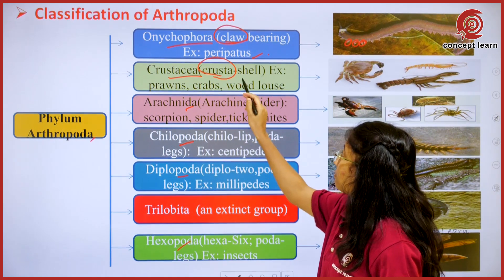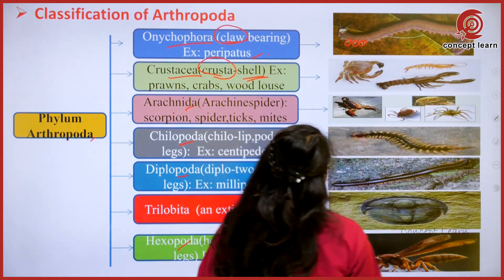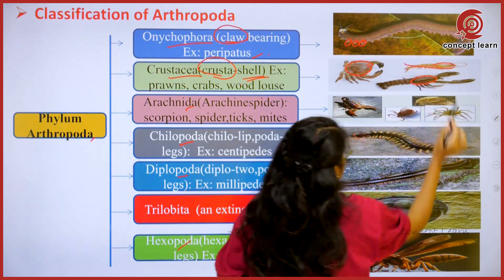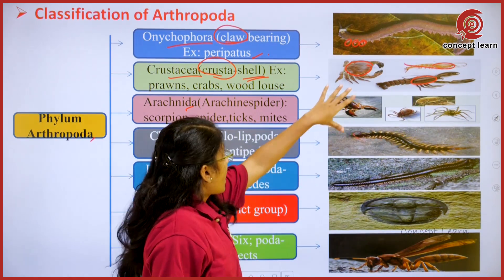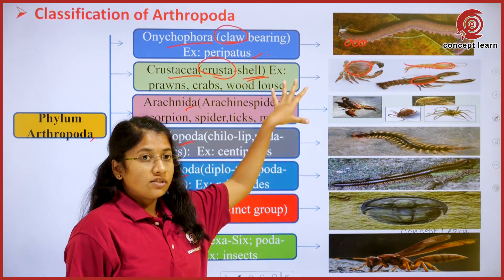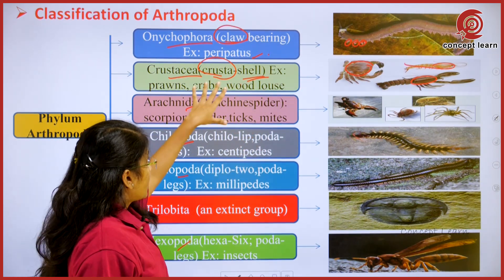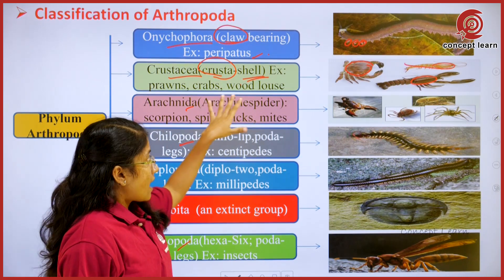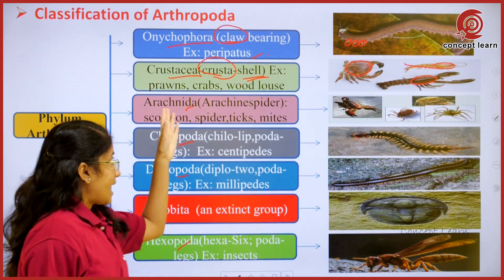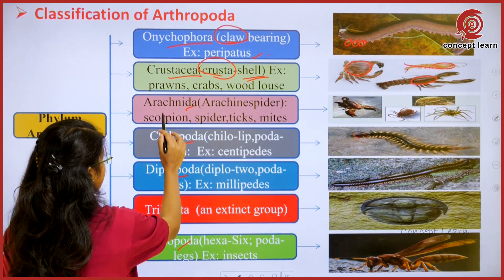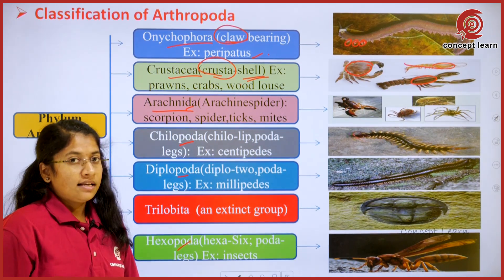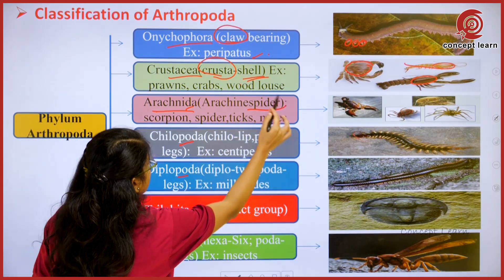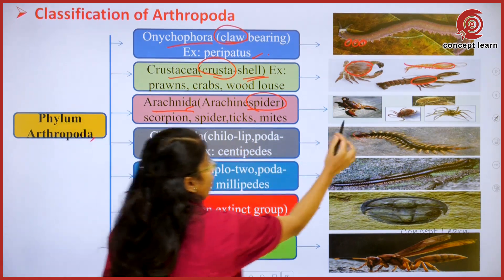The second class is Crustacea. Here 'crusta' represents shell. You can see this is the shell which is present on these living organisms. Because of the presence of the shell, these are known as crustaceans. Prawns, crabs, and woodlice generally come under this class Crustacea.